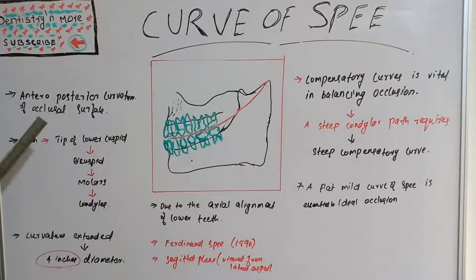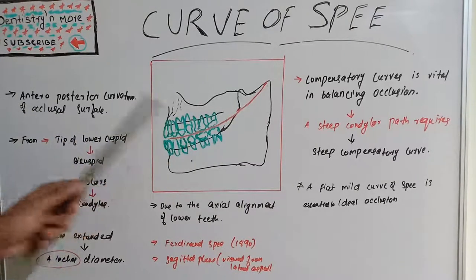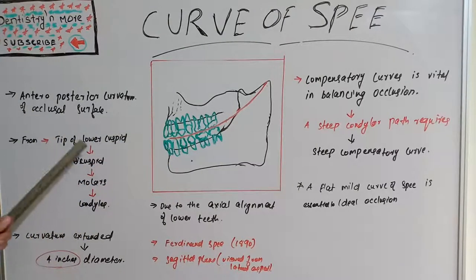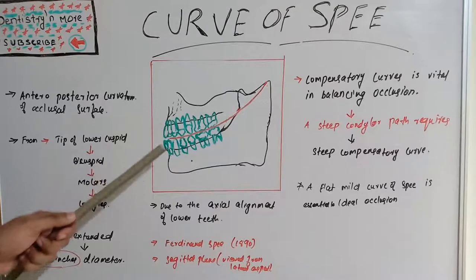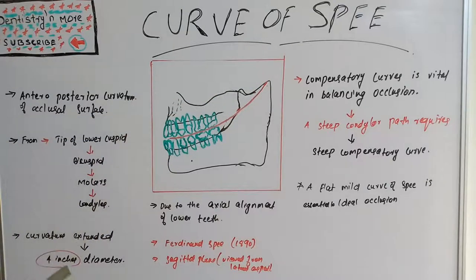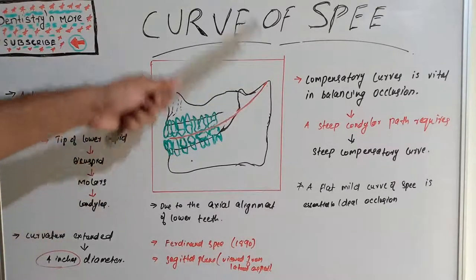It is an anterior posterior curvature of occlusal surface starting from the tips of lower cuspids, that is canine, bicuspids, molars, and condyles. If this curvature is extended, it would reach a 4-inch diameter circle.